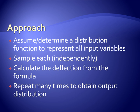Then for each of those random samples of the three input variables, we calculate a deflection. And then we do that a whole bunch of times and we get a whole bunch of deflections. And if we do it enough, then that deflection distribution, that set of outputs, will represent accurately the distribution of the output deflection.